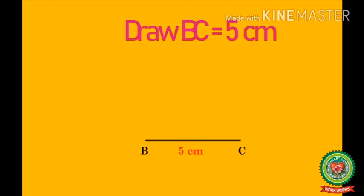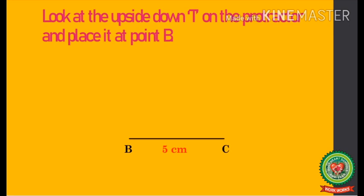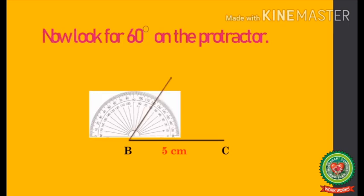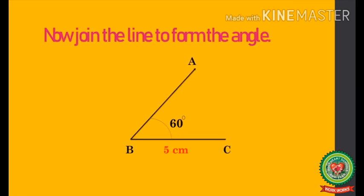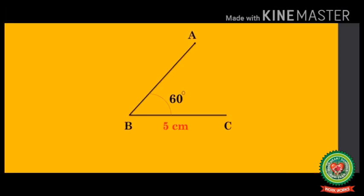To construct an angle, first of all we must draw the line segment that is given to us. Then place the protractor on the vertex. Then look for the degree of angle that is to be constructed. At last, join the line to form the angle. In this way, an angle on the left hand side is constructed.